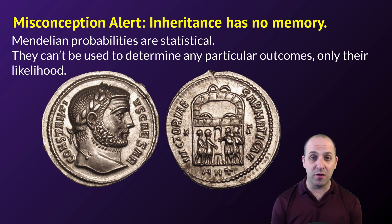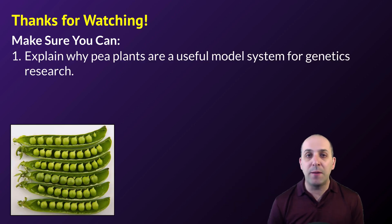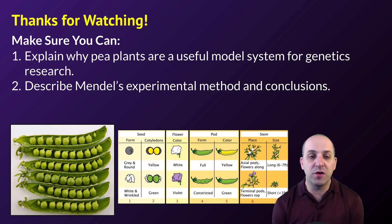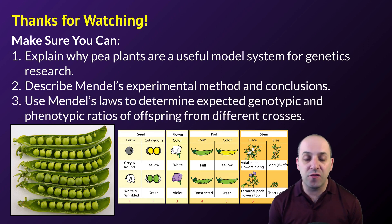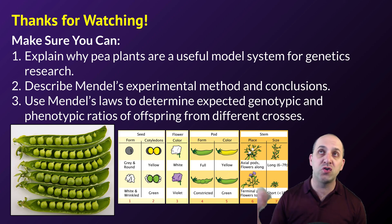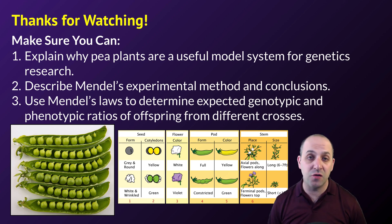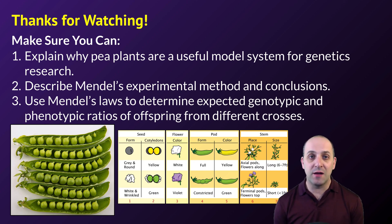Thanks so much for watching our discussion of Mendelian genetics. Make sure you can explain why pea plants are a useful model system, describe Mendel's experimental method and the conclusions he reached, and use Mendel's laws to determine expected genotypic and phenotypic ratios from different crosses. If you know which trait is dominant and which is recessive, you should be able to figure out the predicted likelihood of any particular ratio in a cross. If you can do all those things, you're doing great. Write down any questions you have so you can get the answers you need. Thanks again for watching — have a great day.